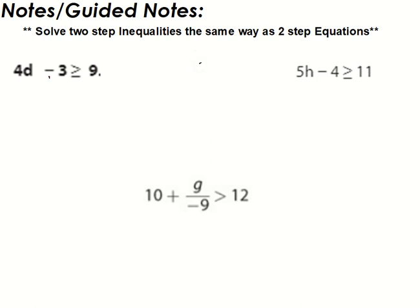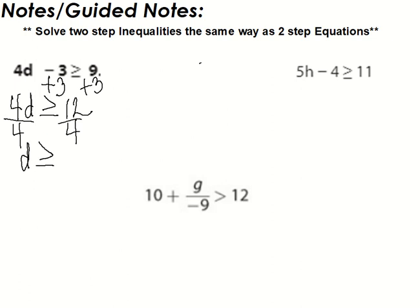So for this first one, I'm going to add three to both sides. I'm going to get 4d greater than or equal to 12. Then I'm going to divide by four. We're going to get d greater than or equal to 3.